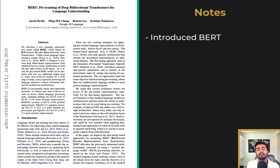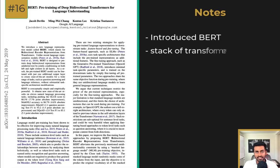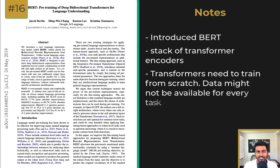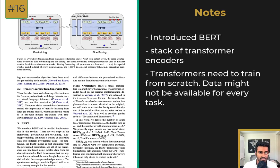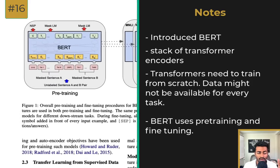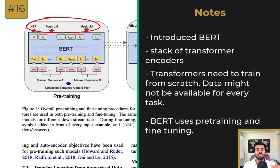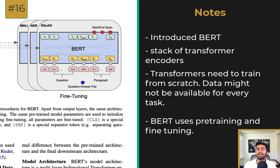Next up we have BERT — Pre-training of Deep Bidirectional Transformers for Language Understanding. BERT is essentially a stack of transformer encoders. The main issue with transformers is that we need to train the architecture from scratch every single time we need to train on a new task such as language modeling, question answering, or machine translation — each requiring a lot of labeled examples. To deal with this, BERT splits its training into two parts: a pre-training phase on language modeling and next sentence prediction, followed by fine-tuning on whatever NLP task we want. With fine-tuning, you don't need as much data.